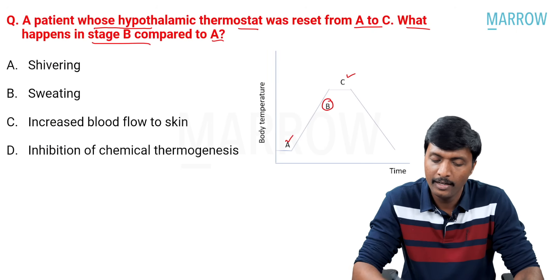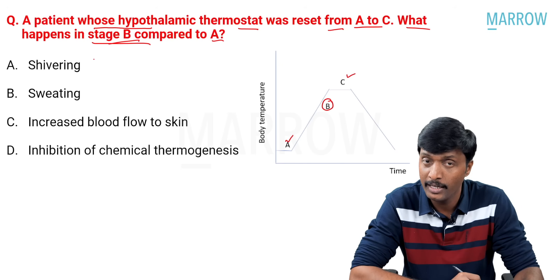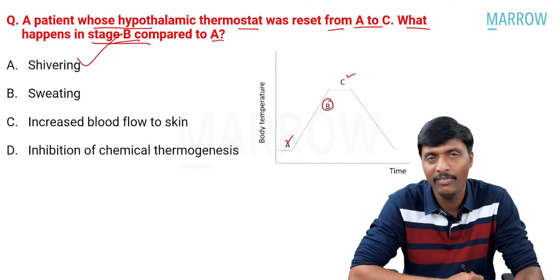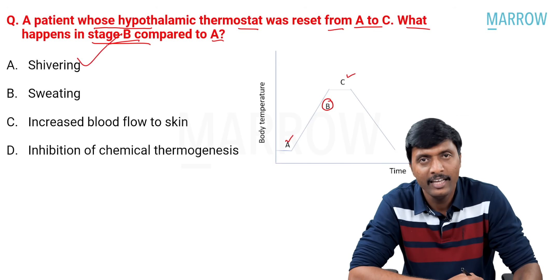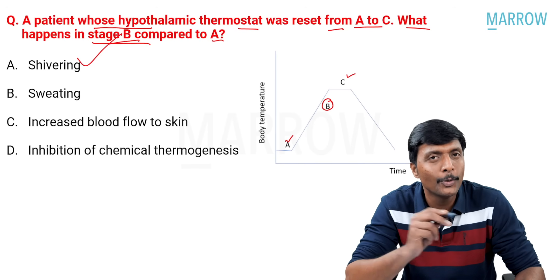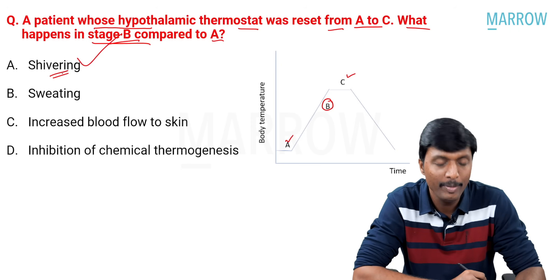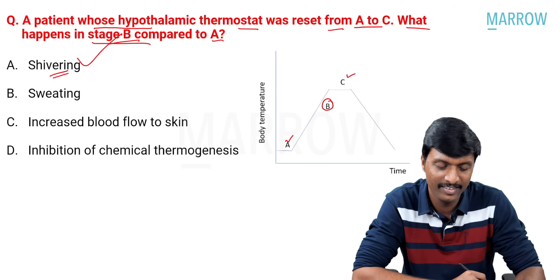So let's go into the question. Reset from A to C. What will happen in stage B? Definitely shivering will happen. Shivering is a form to increase heat. So to go to a new set point, to increase heat, shivering. The answer should be A here, shivering.